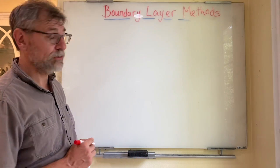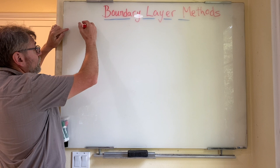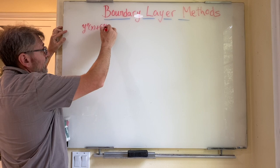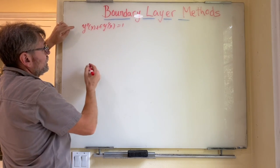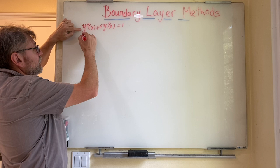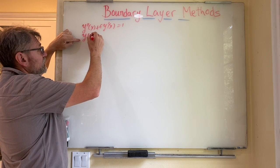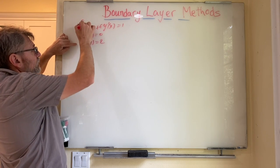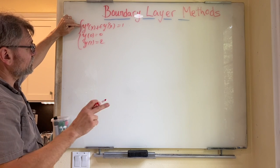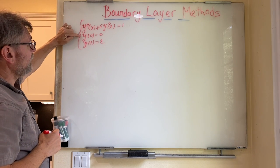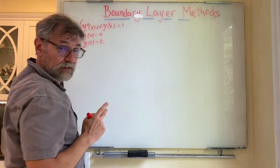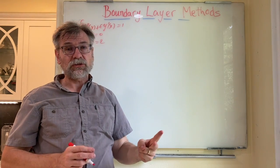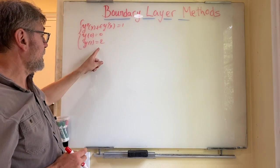The first problem we'll look at is: y double prime of x plus epsilon y prime of x equals one, subject to the boundary conditions y of zero equals zero and y of one equals two. It's a boundary value problem — we have an equation which has to be satisfied and two conditions at the boundaries. We need two boundary conditions because this is a second-order differential equation, and when we integrate it twice we'll get two integration constants.